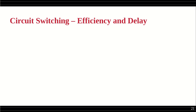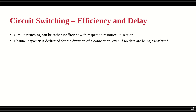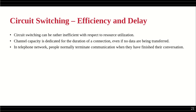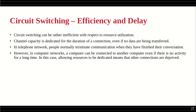Circuit switching is inefficient with respect to resource utilization: channel capacity is dedicated for the duration of the connection even if no data is being transferred. In computer networks, a computer can remain connected to another for a long time with no activity. This means other connections are deprived of those resources — someone else who needs to send information cannot, because the resources are dedicated to parties who aren't actually communicating.